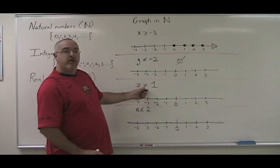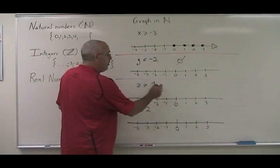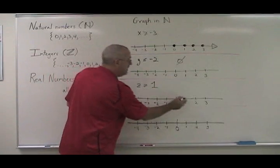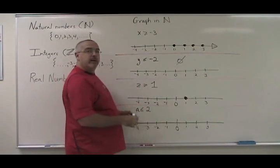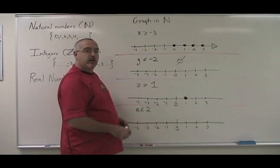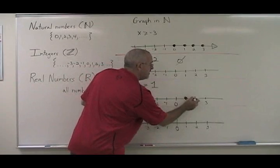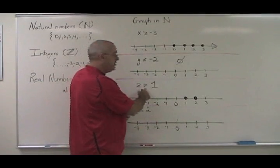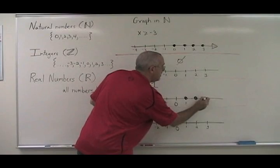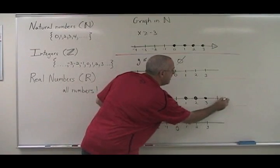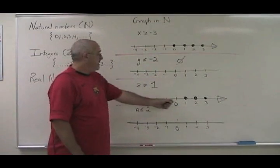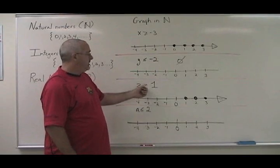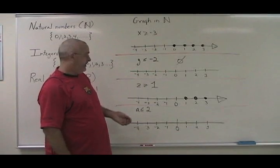Is that greater than or equal to one? Well, one is equal to one, so it has to be in our answer. And then all of the natural numbers that are greater than one are also included, because they make this equation true. So I have one, two, three, and then going on forever in the positive direction. Zero is not included in the answer because it is not greater than one and not equal to one.